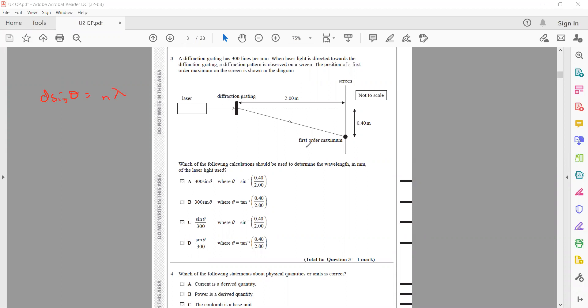We have the formula d sin theta equals n lambda, where n is the order of the image. They mentioned it is the first order maxima, so value of n equals 1. So d sin theta equals lambda. d is 1 by 300, so sin theta divided by 300 equals lambda. How to get theta?